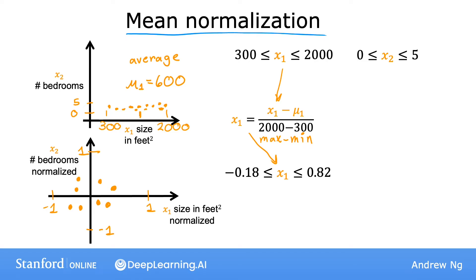Similarly, to mean normalize x2, you can calculate the average of feature 2, and for instance, mu2 may be 2.3. Then you can take each x2, subtract mu2, and divide by 5 minus 0, again the max 5 minus the min, which is 0. The mean normalized x2 now ranges from negative 0.46 to 0.54.